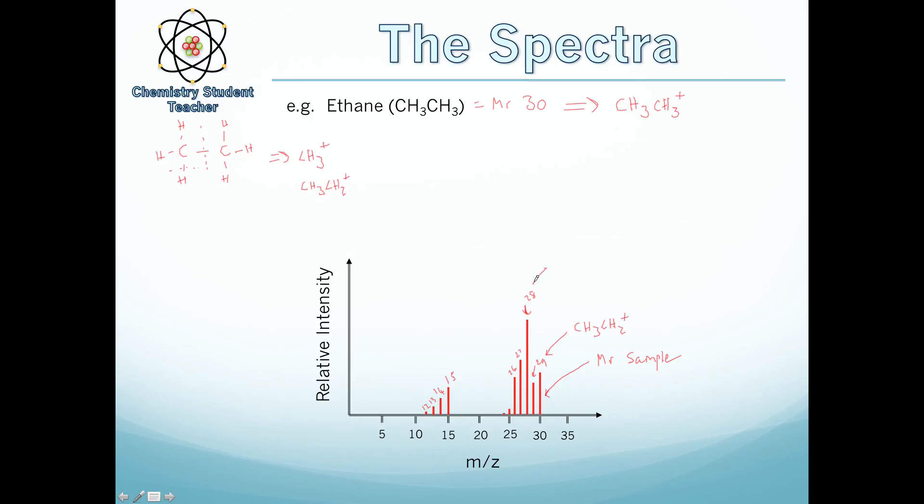Now 28, that means it's lost two from the entire sample, meaning that probably represents CH3CH+. It's just cleaved off another one. And so on for 27 and 26, as you can cleave off these hydrogens around the molecule, all the way down to 24, where you've got C2+.